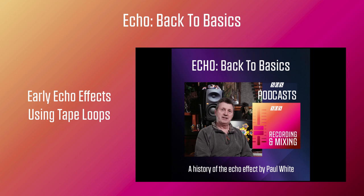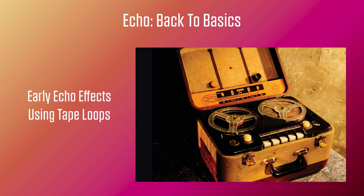Artificial delay was first explored by using a tape recorder to delay a signal by the time taken for the tape to move from the record head to the replay head. The time was short, perhaps as low as 70ms or so at a 15 inches per second tape speed, and there was just a single repeat. That was enough to create the familiar slapback effect that is still popular in rockabilly music today.